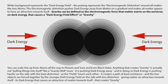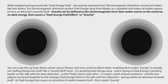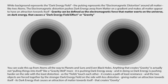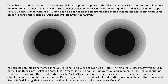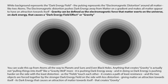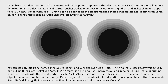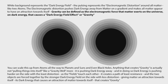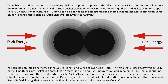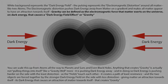You can scale this up from atoms all the way to planets and suns and even black holes. Anything that creates gravity is actually not pulling things into itself like a gravity well. It is pushing dark energy away, and in doing so, dark energy is pushing harder on the side with the least distortion. As the fields touch each other, it creates a path of least resistance and the two objects are forced together by the stronger dark energy field on the side with less distortion, giving matter an attraction towards itself.